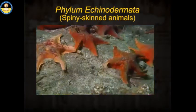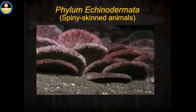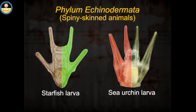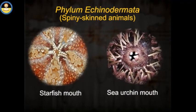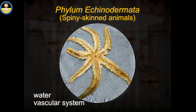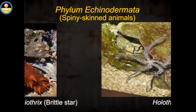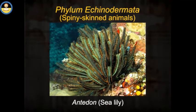Phylum Echinodermata — spiny-skinned animals. All echinoderms are marine organisms. In the larval stage, most echinoderms are bilaterally symmetrical. Most adults are radially symmetrical and have a ventral mouth. Echinoderms have a water vascular system consisting of a network of radial canals which extend through each of the extensions of the animal. Examples: Asterias (starfish), Ophiothrix (brittle star), Holothuria (sea cucumber), Echinus (sea urchin), and Antedon (sea lily).